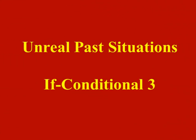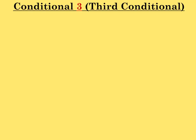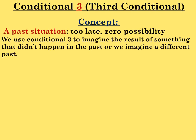Unreal Past Situations: If Conditional 3. The concept of this conditional — we use it to imagine the result of something that didn't happen in the past, or we imagine a different past. So the possibility of this situation is zero, because it's impossible to happen and it's too late.